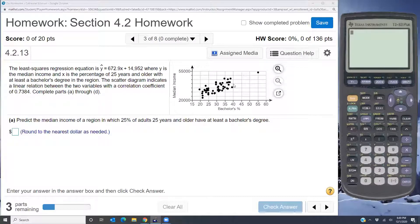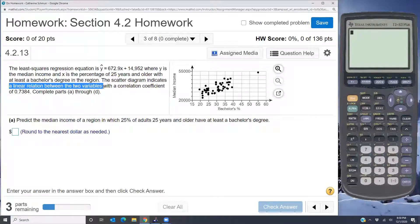The scatter diagram shown over here on the right indicates a linear correlation or linear relation between the two variables with a correlation coefficient of 0.7384. Now there are two really important things to note here. One is that you're given the correlation equation, so you're given the y hat equation, and you are told that a linear correlation or linear relation between the two variables is indicated.